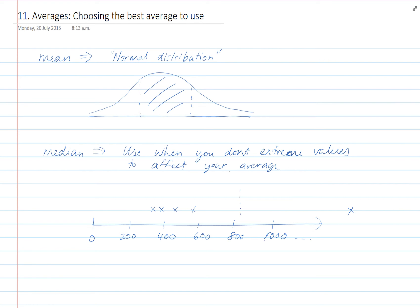If you worked out the mean, the mean would probably be up here. And to say that the average house price is over $800,000 when four of them were far less than that doesn't really make sense.